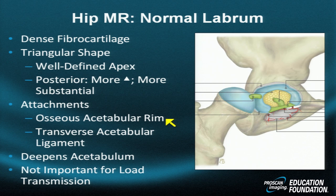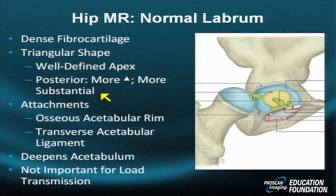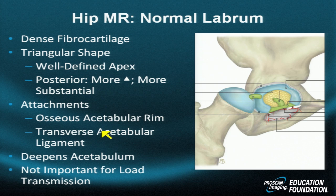The normal labrum consists of dense fibrocartilage, but it's not true fibrocartilage throughout. It has a triangular shape in cross-section — thicker, more triangular, and more substantial posteriorly. This is why the posterior labrum is prone to fracture, rupture, and tear with posterior dislocation, which is the common form of dislocation.